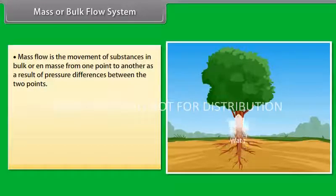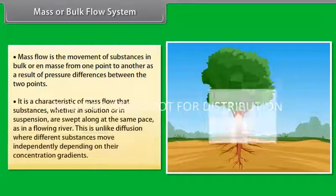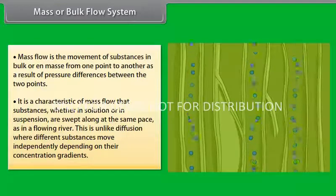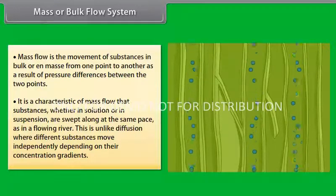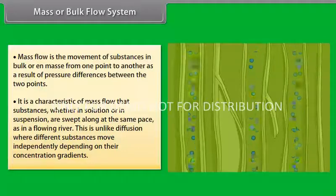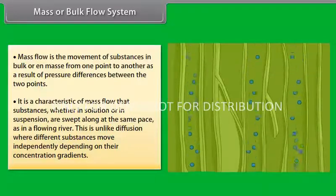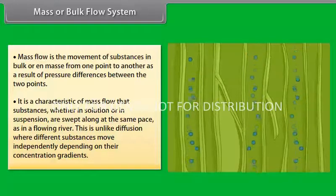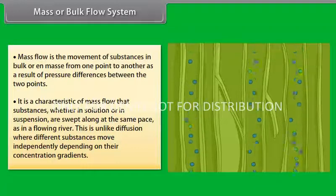Mass flow is the movement of substances in bulk or en masse from one point to another as a result of pressure differences between the two points. It is a characteristic of mass flow that substances, whether in solution or in suspension, are swept along at the same pace as in a flowing river. This is unlike diffusion, where different substances move independently depending on their concentration gradients.